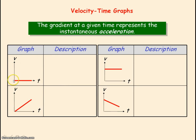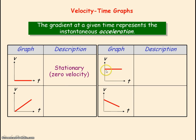For this graph, we can see that the velocity is zero, so the object is stationary. For this next graph, the velocity is constant. By the gradient, we can see that for a horizontal line it's zero, so that means zero acceleration.